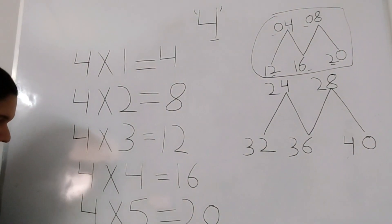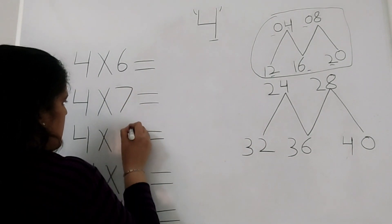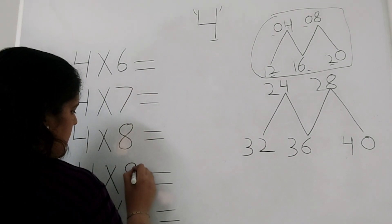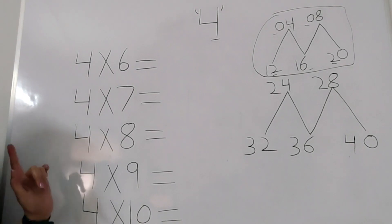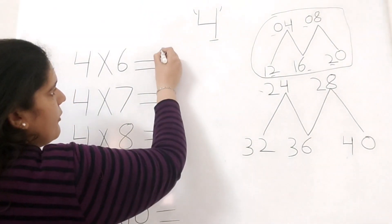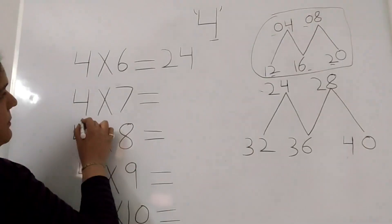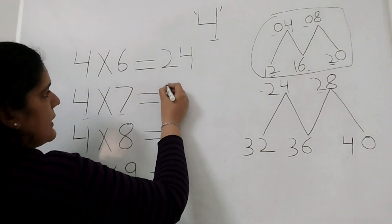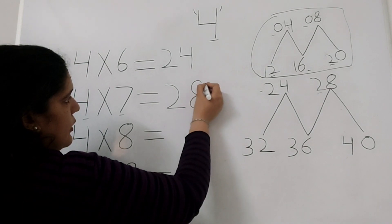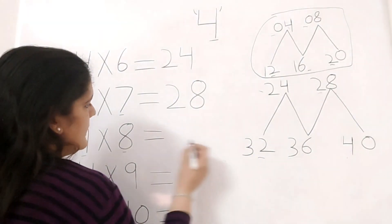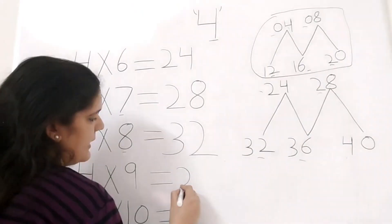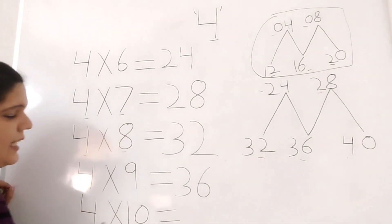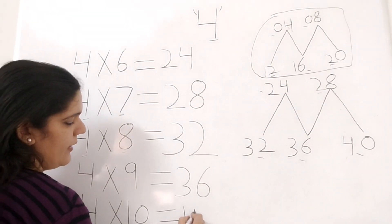Now we will go to the second M. 4 times 6 is equal to 24. 4 times 7 is equal to 28. 4 times 8 is equal to 32. 4 times 9 is equal to 36 and 4 times 10 is equal to 40.